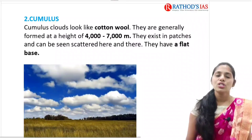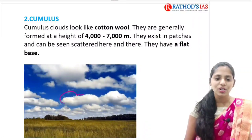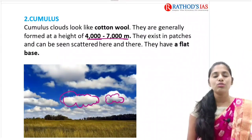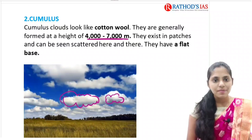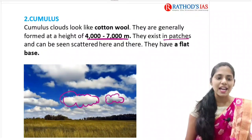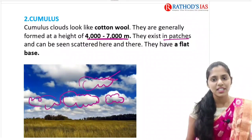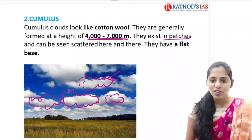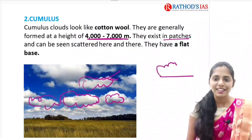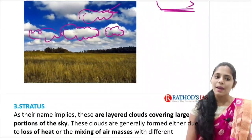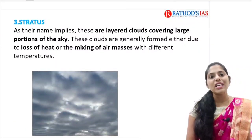Next is cumulus clouds. Cumulus clouds are cotton wool type - you can see in the image they are wool-like. They are mainly found at four to seven kilometers height and they exist as patches scattered here and there. They have a flat base - that is about cumulus clouds.